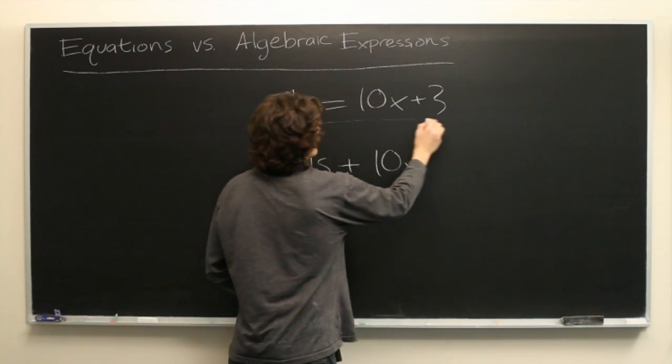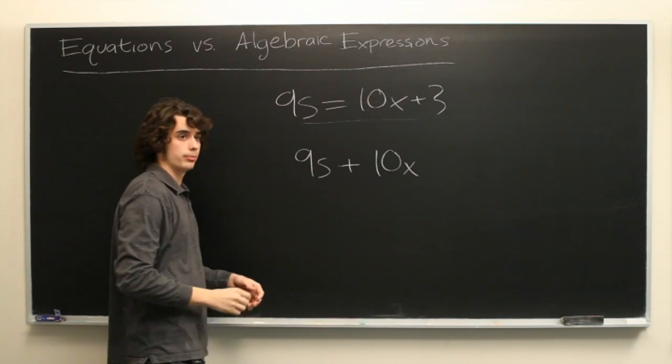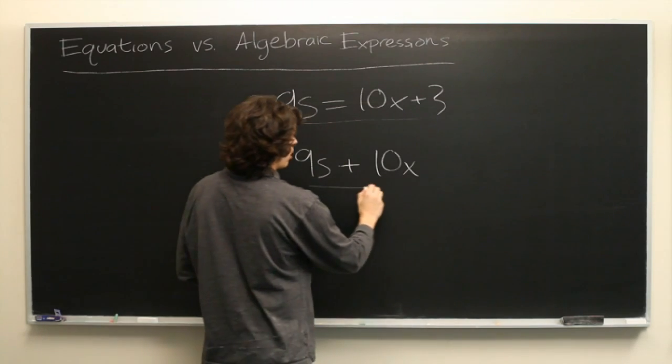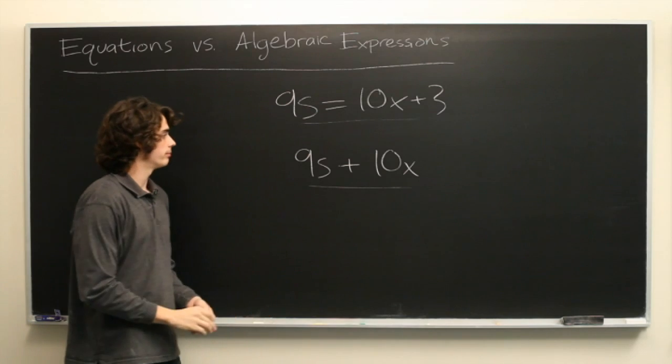Equations have an equal sign with quantities on both sides. Algebraic expressions have no equal signs in them, and that's all there is to it.